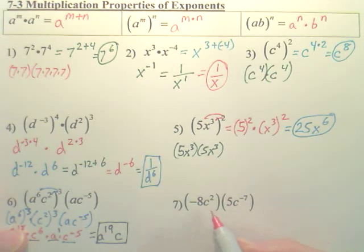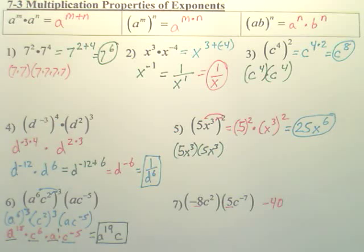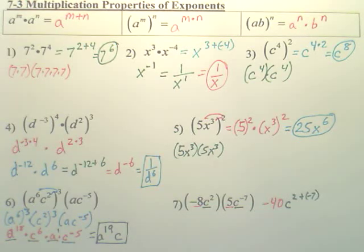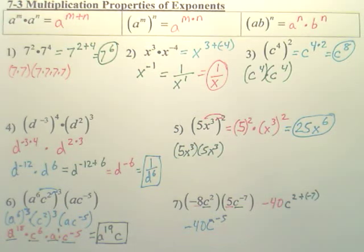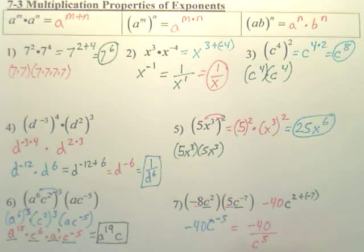Last problem: multiply the two front numbers first — negative eight times five gives negative forty. Then multiply the c terms by adding the powers: c to the two plus negative seven. Two plus negative seven is negative five, so it's c to the negative fifth. Negative forty stays on top — the negative five only affects the c, not the negative forty. So the final answer is negative forty over c to the fifth.